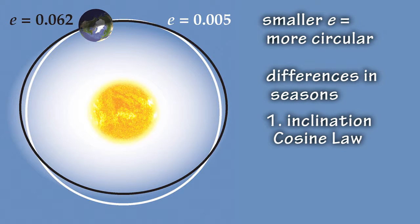When the eccentricity is near-circular, seasonal variation derives solely from the differences in the angle between the axis of Earth's diurnal rotation and its orbital plane around the Sun, cosine law.